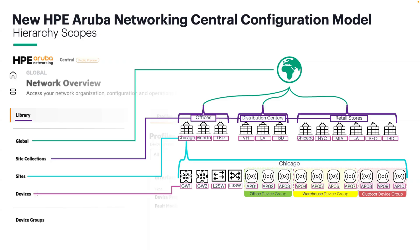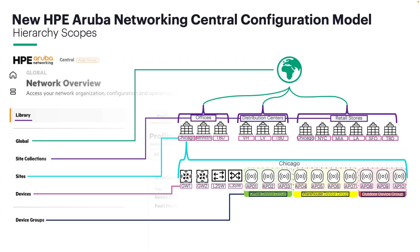Then we have devices, which are the actual gateways, switches, and APs deployed at each site. Central sees each device, checks its function, and applies the relevant profiles from the hierarchy. If needed, we can customize device-specific settings such as uplink ports, SVIs, etc. at this level. Devices can also be grouped logically, similar to AOS 8 AP groups — for example, in the Chicago site, APs are grouped into three separate groups for specialized configurations like different RF settings or enabled/disabled SSIDs. Altogether, this hierarchy lets us manage thousands of devices across multiple global regions while allowing flexibility to fine-tune per site or per device, simplifying day-to-day administration and maintaining a consistent standard.